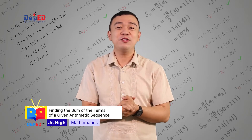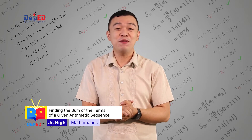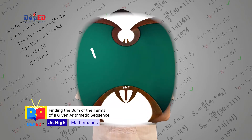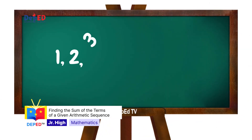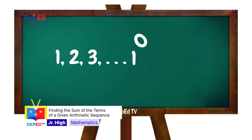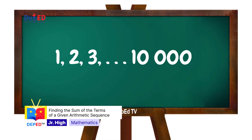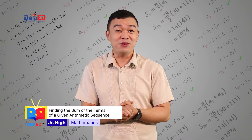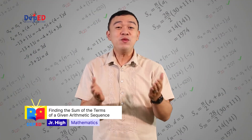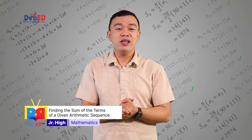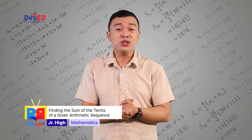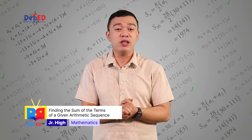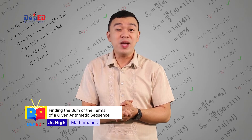What if you're asked to find the sum of the terms of the sequence 1, 2, 3, up to 10,000? There are 10,000 terms to be added one by one to get their sum. In doing this kind of solution, it is very challenging, especially if you're dealing with a sequence that has many terms.